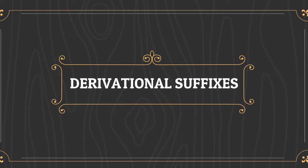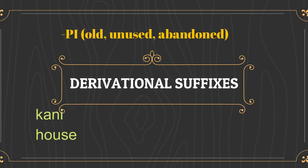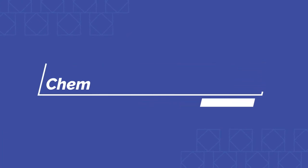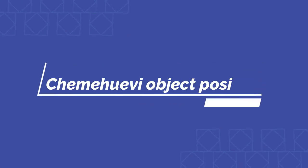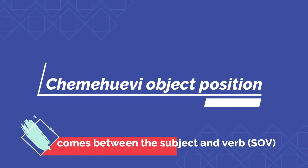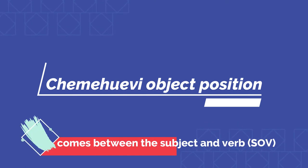The suffix -p is used for old, unused, or abandoned objects. For example, kani means house, while kanip means abandoned house. Chemehuevi has an object position in its syntax, and in a typical sentence it comes between the subject and the verb, resulting in subject-object-verb sentence order.